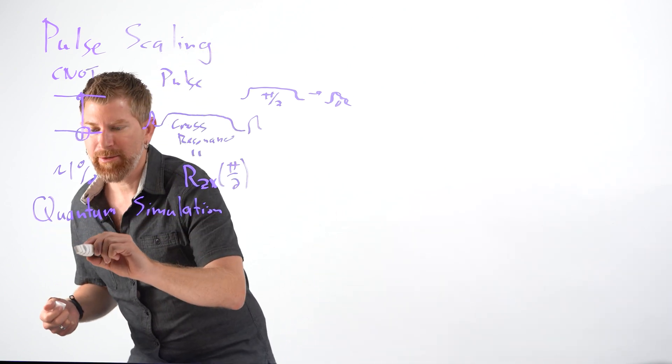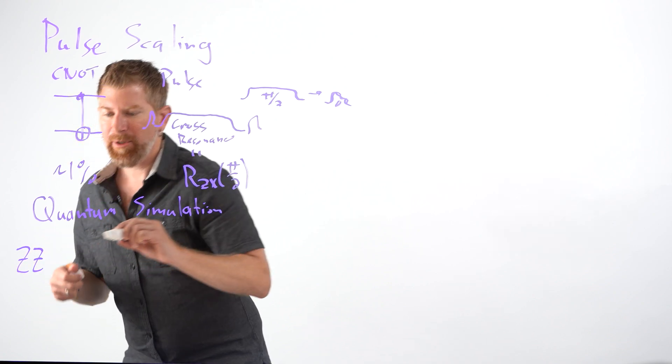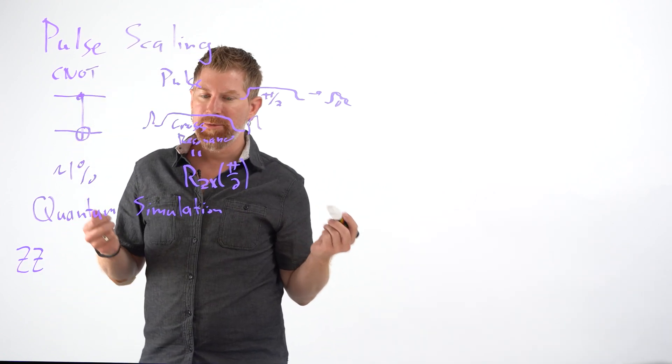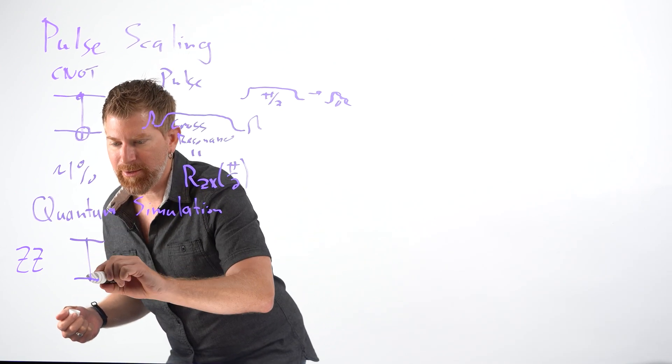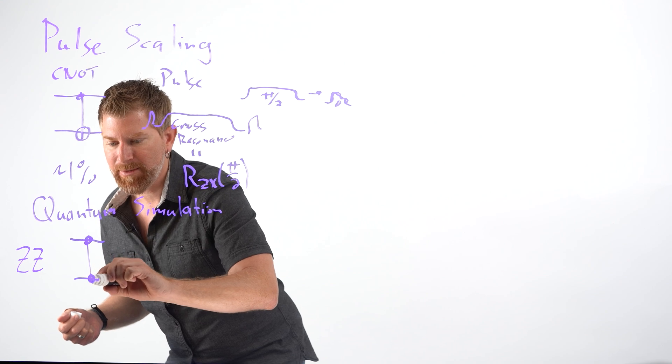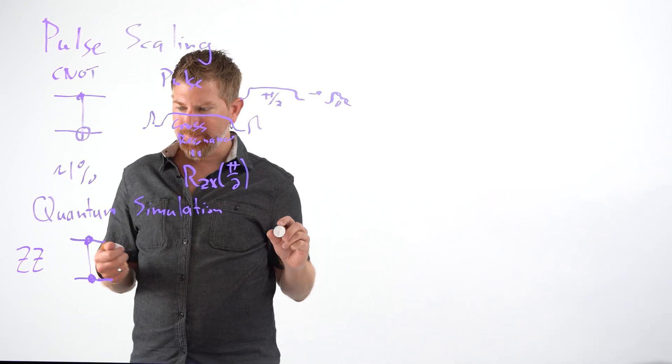And often in quantum simulation problems, you have a gate that is called a ZZ, because most of the quantum simulations can be broken down in terms of these ZZ gates, which have a circuit representation that looks like this because it's symmetric.